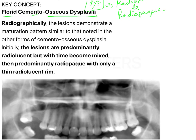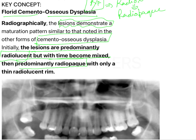The florid cemento-osseous dysplasia, radiographically, demonstrates a maturation pattern similar to other forms of cemento-osseous dysplasia. The lesions are predominantly radiolucent, but with time become mixed, then predominantly radio-opaque with only a thin radiolucent rim around them. Initially radiolucent, as time passes they become mixed, and finally radio-opaque with a radiolucent ring remaining.